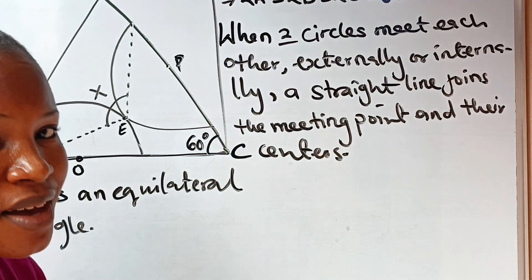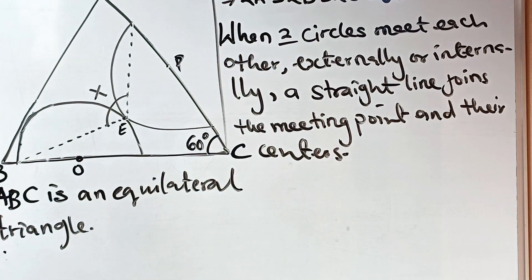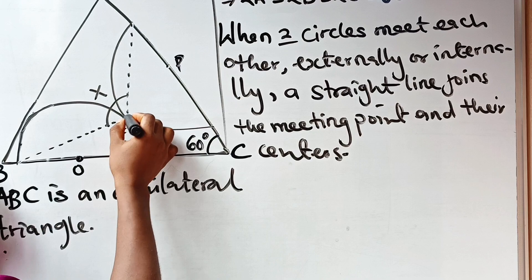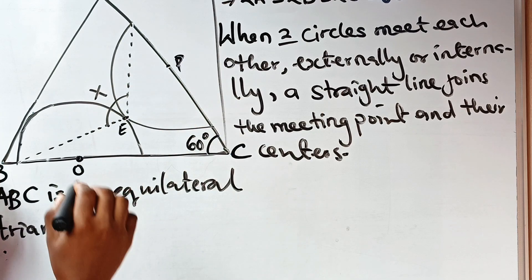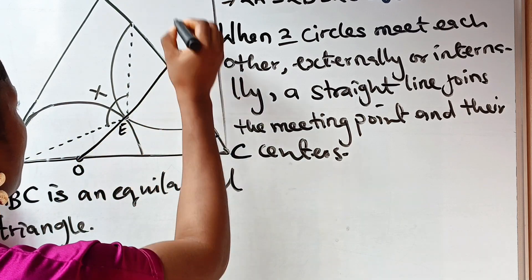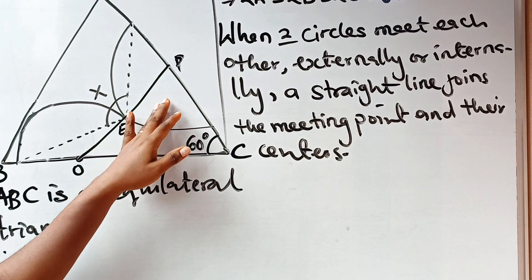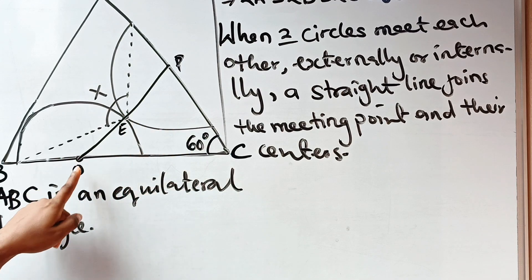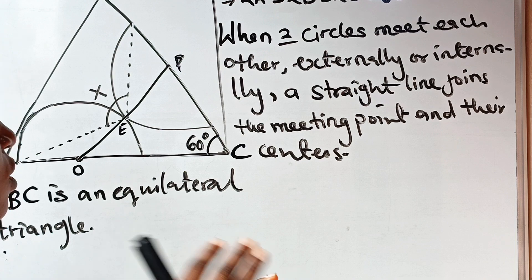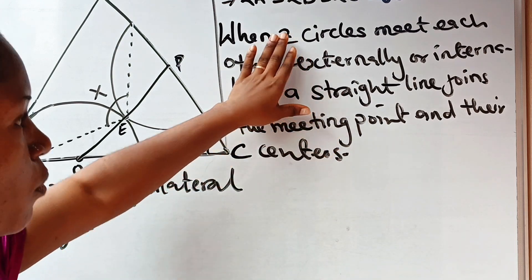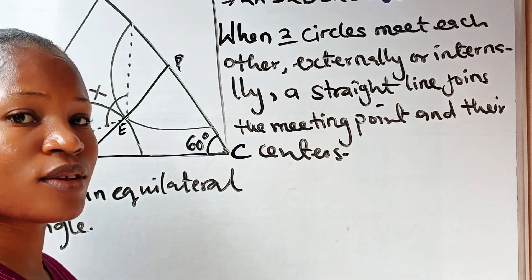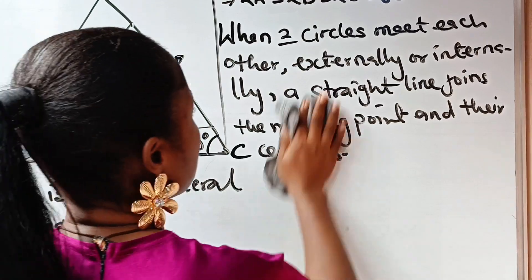What this means is that if I join O to E to P, I'm going to get a straight line. So even though this is not drawn to scale, O-E-P is a straight line. I'll clean this off now because I believe you all understood what I was trying to show.